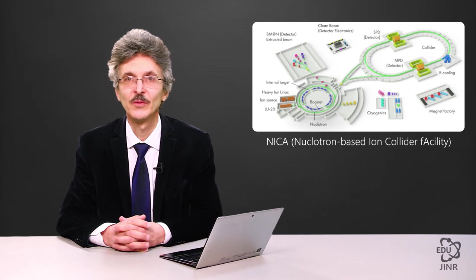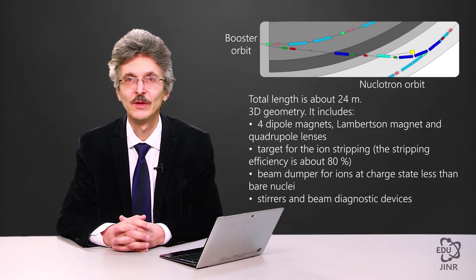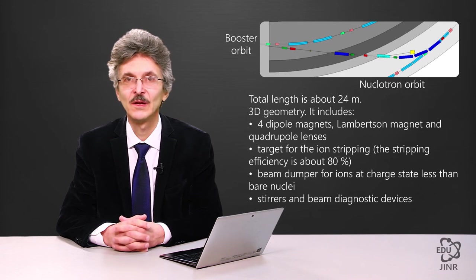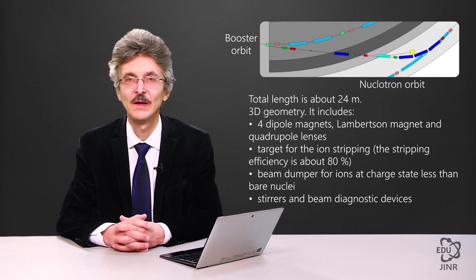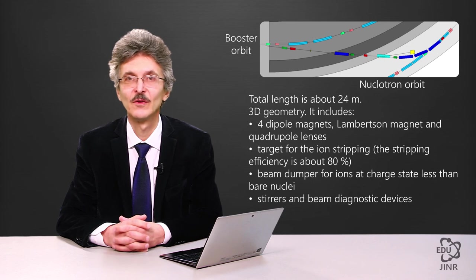Their median planes differ in height, and their orbit radii also differ. Therefore, the beam transport channel from the booster to the nucleotron has a rather complex 3D geometry, consisting of dipole magnets and quadrupole lenses. In the same channel, a separation of the required ion charge state is carried out. Ions of gold or other elements not needed for acceleration in the nucleotron are separated with the use of a special Lambertson magnet and directed to the beam dumper.